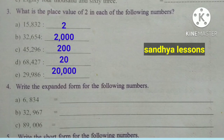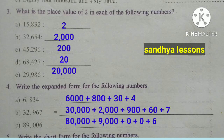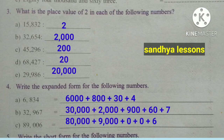Third question: what is the place value of 2 in each of the following numbers? In 15,832 — 2 is in one's place, so place value is 2. In 32,654 — 2 is in thousand's place, so place value is 2,000. In 45,296 — 2 is in hundred's place, so place value is 200. In 68,427 — 2 is in ten's place, so place value is 20. In 29,986 — 2 is in ten-thousand's place, so place value is 20,000.